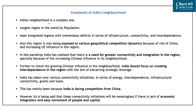India's neighborhood is a very complex one, surrounded by hostile states like Pakistan and China, and receiving challenges from neighbors like Nepal and Bangladesh. Due to existing issues of terrorism with Pakistan, land boundary issues with China, and political issues with Nepal and Bangladesh, India's neighborhood is complex. The region constituting India and its neighbors has the world's largest population; however, it is also the world's least integrated region, with deficits in infrastructure, connectivity, and interdependence.